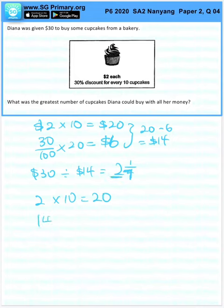So this will cost her 14 times 2, $28. Now she has $30. 30 minus 28 is $2.